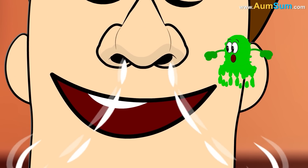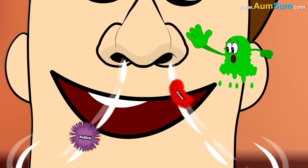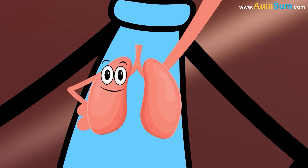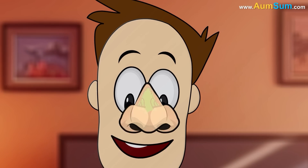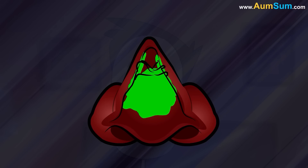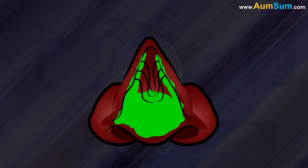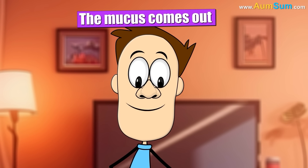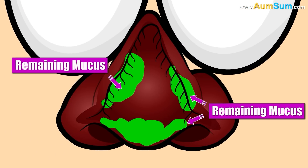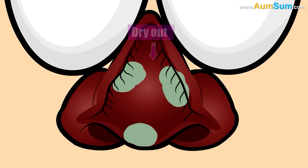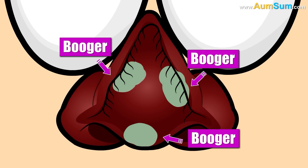Mucus helps catch harmful viruses, dirt, germs, and pollen, and thus protects our lungs. Tiny hairs inside our nose called cilia move the mucus along with the trapped stuff towards the front of our nose. Now when we sneeze or blow our nose, the mucus comes out. If some mucus along with the debris remains in the nose, then it starts to dry out and clumps together, and finally becomes a booger.